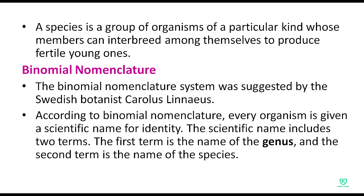According to binomial nomenclature, every organism is given a scientific name for identity. The scientific name includes two terms — the first term is the genus and the second term is the species. For example, for human beings, the scientific name is Homo sapiens — homo is the genus and sapiens is the species.